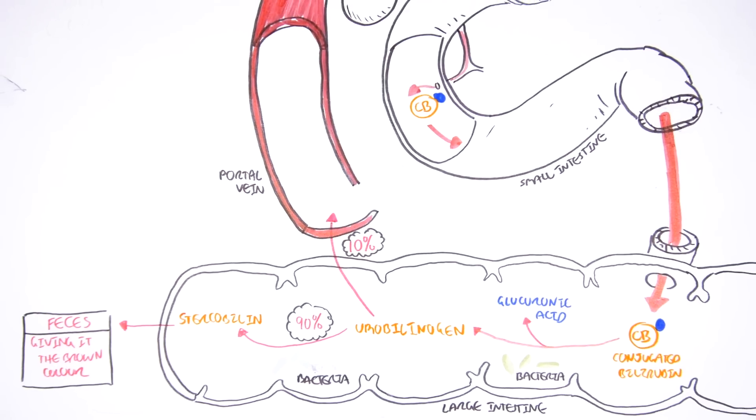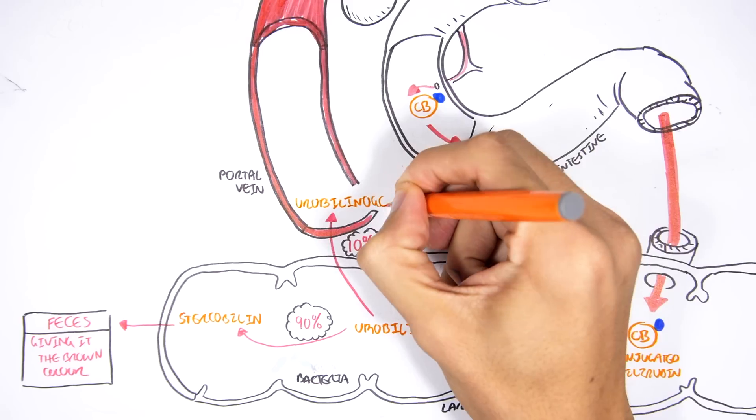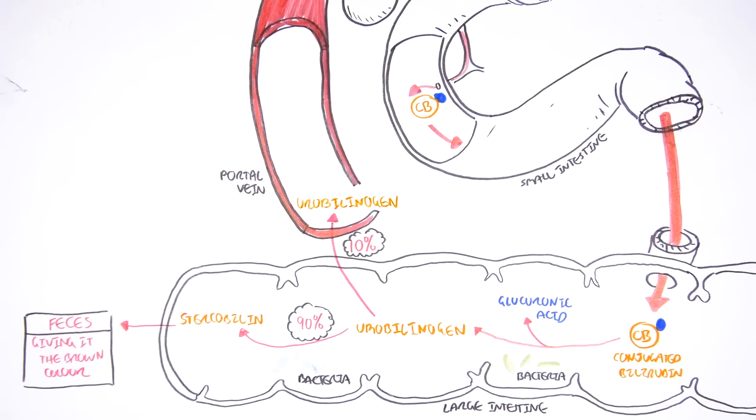So that's what happens with most of the bilirubin. It goes out, is excreted in feces, giving it its brown color. But what happens with the 10-15% of urobilinogen that was reabsorbed into the blood?